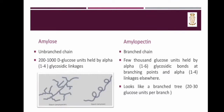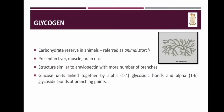Next is glycogen. It is the carbohydrate reserve in animals, also referred to as animal starch. It is present in liver, muscle, brain, etc. The structure of glycogen is similar to amylopectin but with more number of branches. The glucose units are linked together by alpha 1-4 glycosidic bonds and alpha 1-6 glycosidic bonds at branching points.